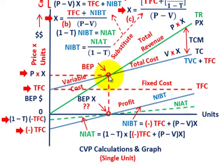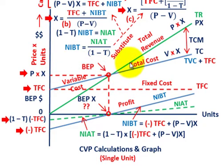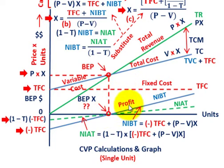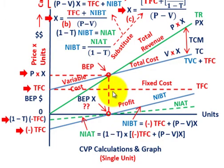These are our generalized equations for solving cost-volume-profit problems. Going through this basic arithmetic, you can solve for the break-even point, determine revenues and total costs once you know the X units, and find the quantity needed to generate a targeted profit — both net income before taxes and net income after taxes.